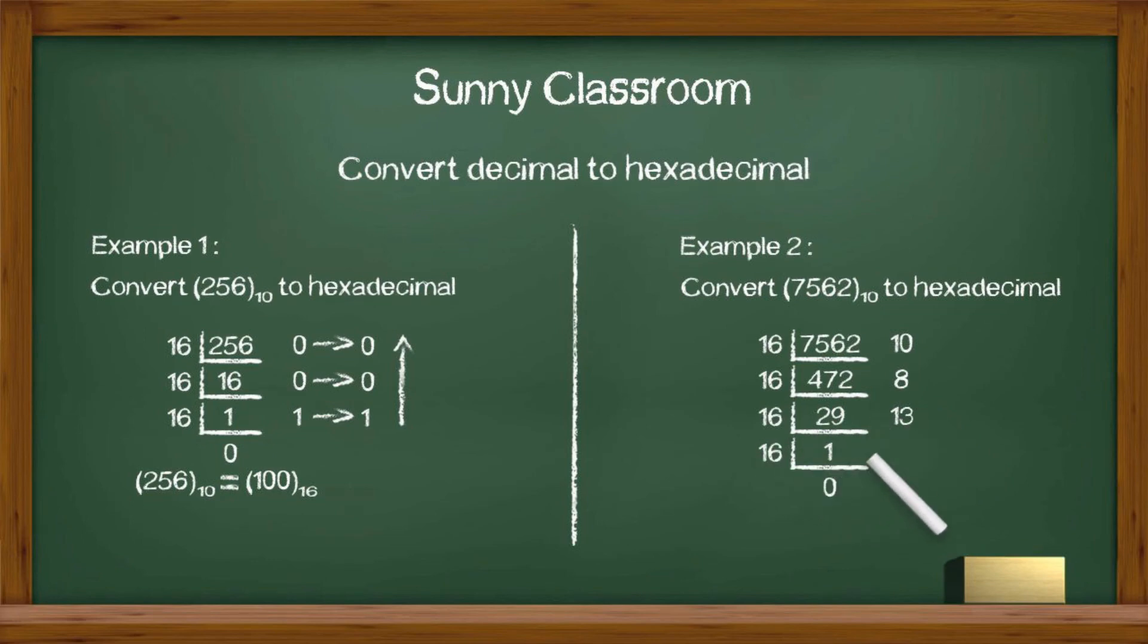Step 4. Divide 1 by 16 again. We get 0 and the remainder is 1. Remember, once the result is 0, we stop.